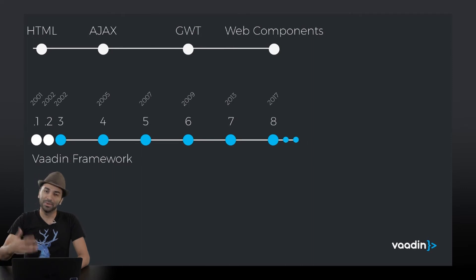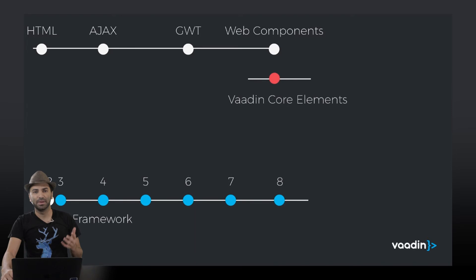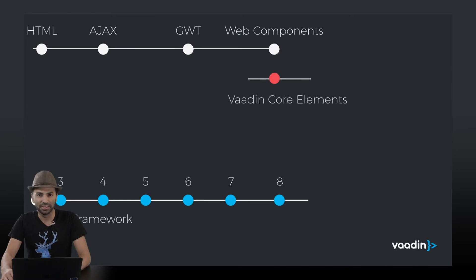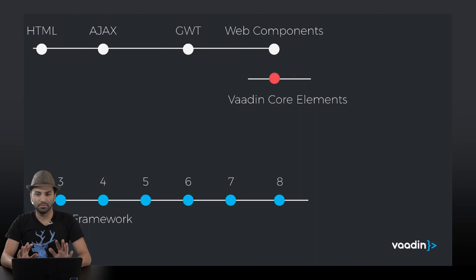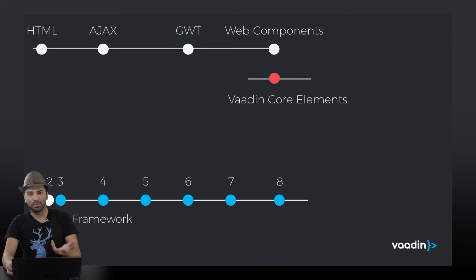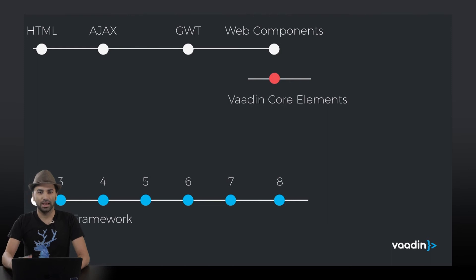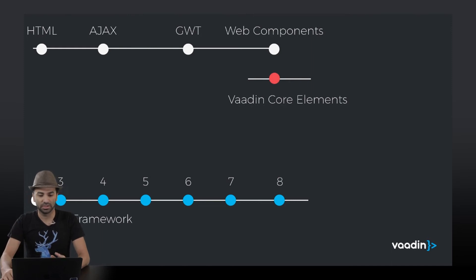And to make things evolve even better, we started to make the so-called VADEN core elements, which are basically our same powerful UI elements, but written in a web component standard way. And they are totally written on the front-end without JWT.